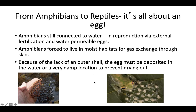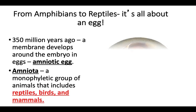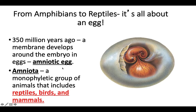To be an amniote — the amniotic egg is believed to have developed about 350 million years ago. An amniote, or amniota, is a group of animals that includes reptiles, birds, and mammals, because these animals have amniotic eggs either inside them, like mammals, or they lay eggs like reptiles and birds do. The rest of our time will focus on the amniotic egg.